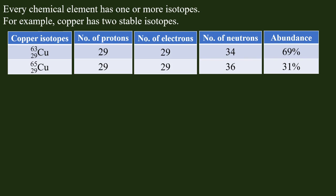Copper has isotopes Cu-63 and Cu-65. Cu-63 has 29 protons and 34 neutrons. Cu-65 has 29 protons and 36 neutrons. Both have 29 protons — they are isotopes of the same element.